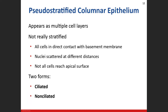Our next type is pseudostratified columnar epithelium. Pseudostratified means falsely stratified — it will appear to be many layers, but it's not. If it's a single layer of epithelium, all the cells make direct contact with the basement membrane. However, the nuclei are scattered in a way that gives the appearance of stratification. Additionally, not all cells make it to the apical surface, though all are attached to the basement membrane.